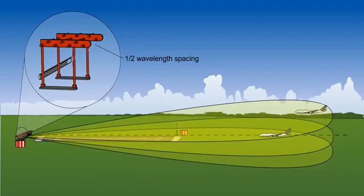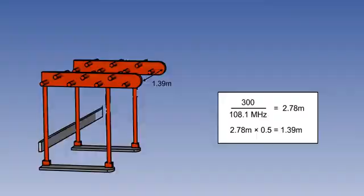However, side lobes are produced. Given that ILS systems transmit between 108.1 and 111.95 megahertz, if we take a signal at 108.1 megahertz, we can calculate the wavelength as 300 divided by 108.1 which gives 2.78 meters. So, the antennae should be spaced at 1.39 meters.